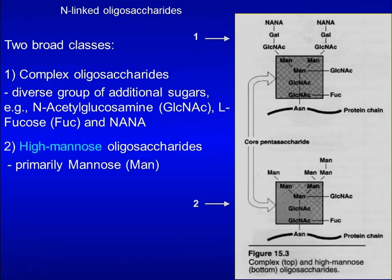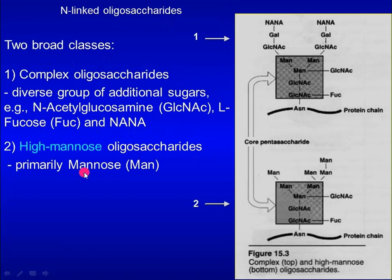N-linked oligosaccharides can be divided into two broad classes. One is complex oligosaccharides that contain a diverse group of additional sugars such as N-acetylglucosamine, L-fucose, and NANA. The other is high-mannose oligosaccharides that primarily contain mannose.